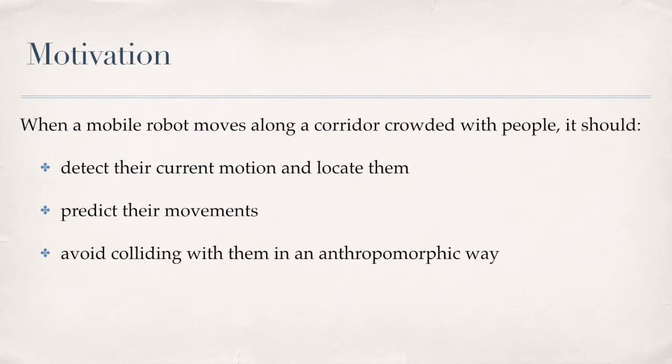And let's start with motivation. We'd like to build a system that is able to be implemented on a mobile robot application as a human motion detection. So the idea is when a mobile robot moves along a corridor crowded with people, you should be able to detect their current motion and locate them and also to predict their movements. And then we can make a decision about changing the path to avoid colliding with them.